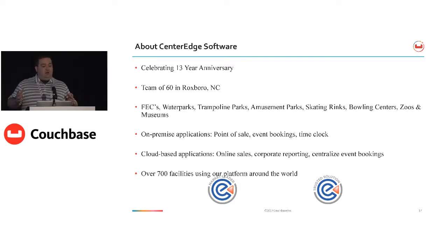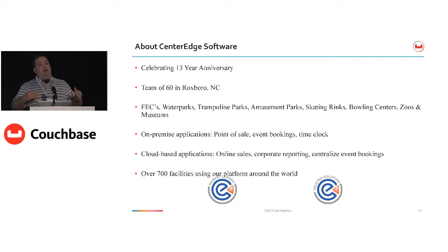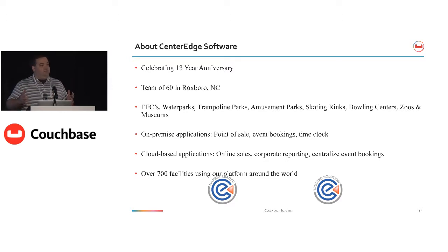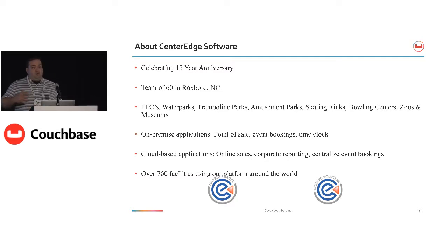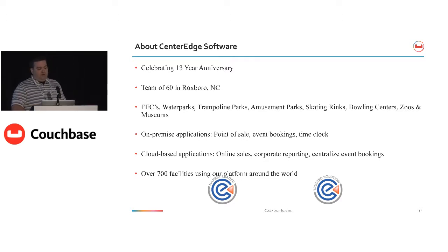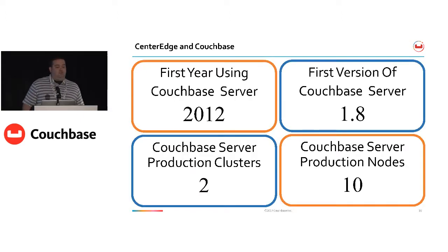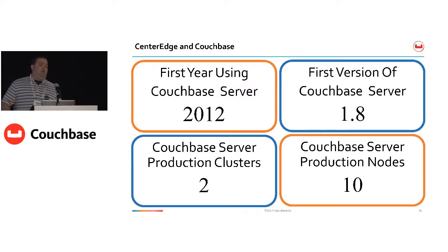We started back in 2004 as an on-premise application. We put Microsoft SQL Server in a box on-premise and ran our point of sales off of it. Today we're more of a hybrid system — we still need to be on-premise because I can't stop taking money for tickets just because my internet connection is down. However, there's also a significant online portion: selling tickets online, liability waivers, birthday party bookings, and online reporting. We first started using Couchbase in 2012 on version 1.8, back before there was any MapReduce views or indexes — it was all pure key-value document store.